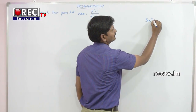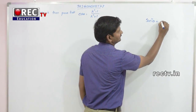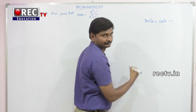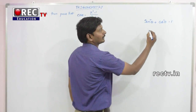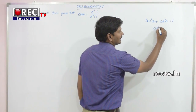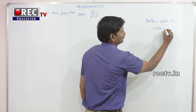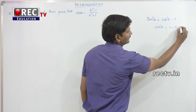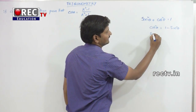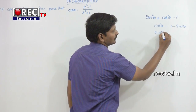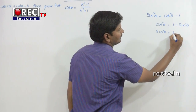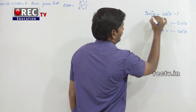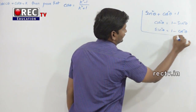First one: sin²θ + cos²θ = 1. From this, cos²θ = 1 - sin²θ, and sin²θ = 1 - cos²θ. We have to keep these two in mind.